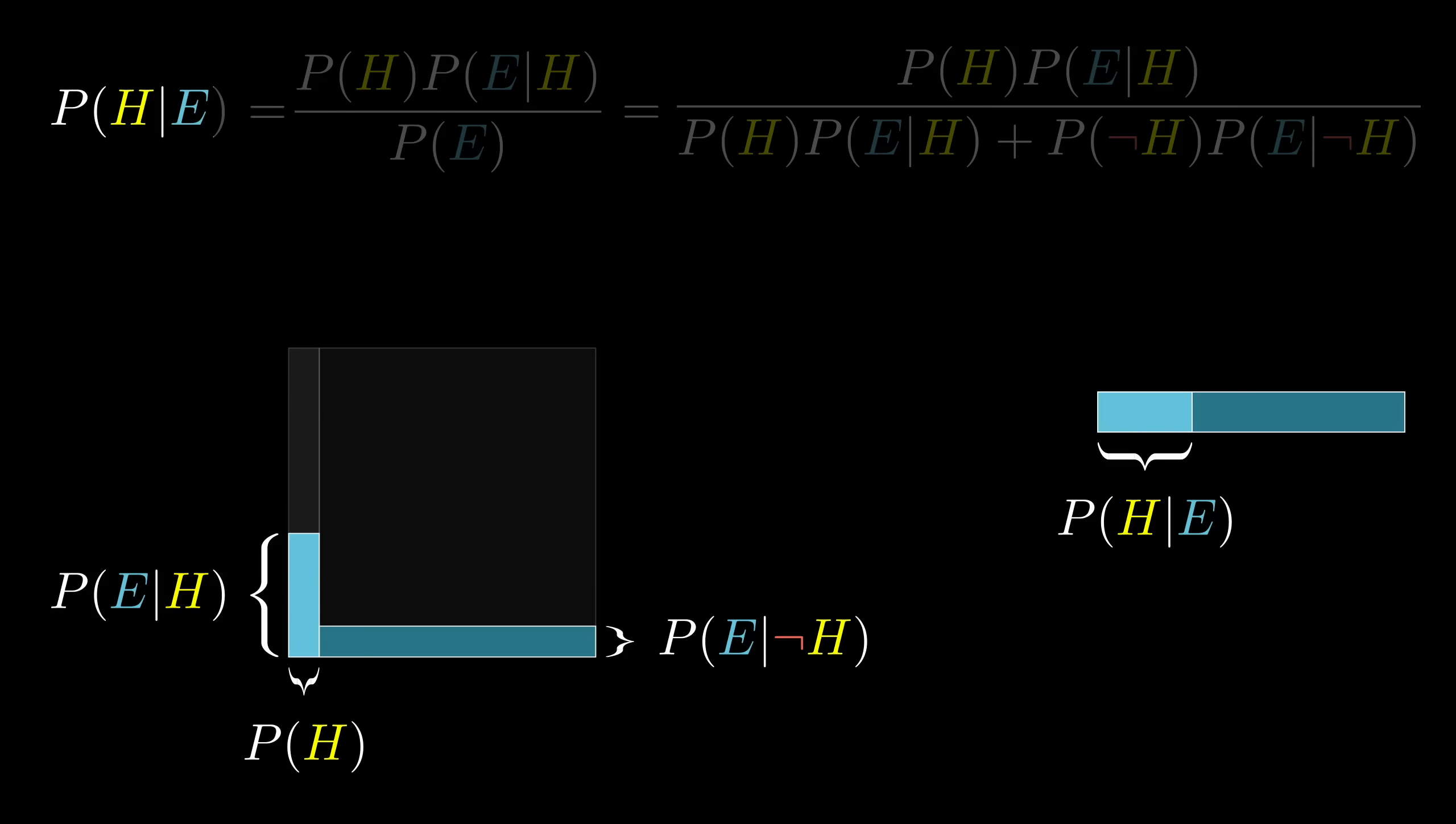Bayes' theorem spells out what that proportion is, and if you want you can read it geometrically. The probability, something like P(H) times P(E|H), the probability of both the hypothesis and the evidence occurring together, is the width times the height of this little left rectangle, the area of that region.